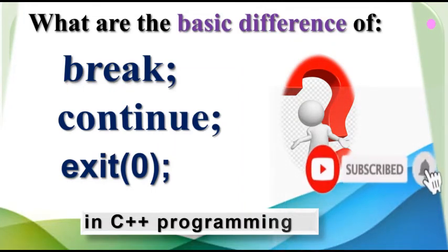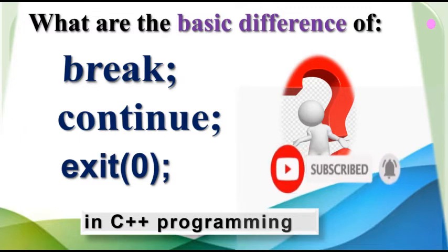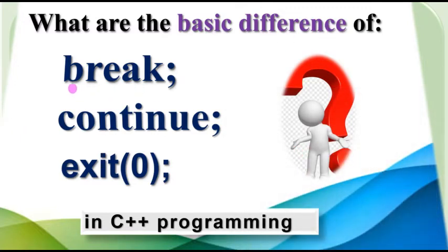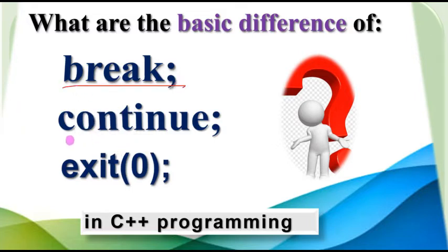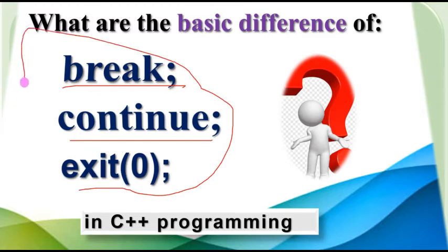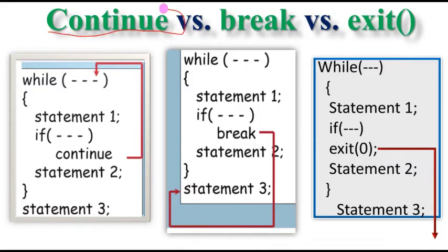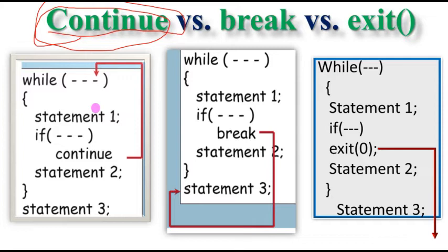Hi guys, welcome to my YouTube channel. Today I will show you the basic concepts including the difference between break, continue, and exit — the jumping and control statements for loops in C++ programming. These keywords and functions in C++ help to control and jump for the loop or the execution of the program during iteration.